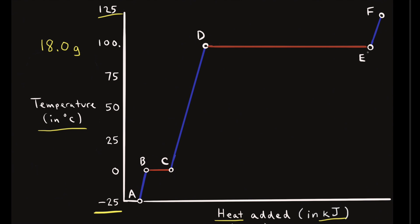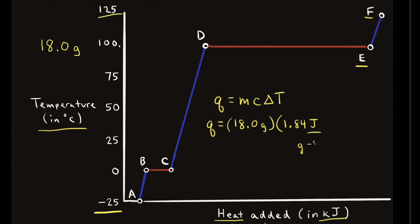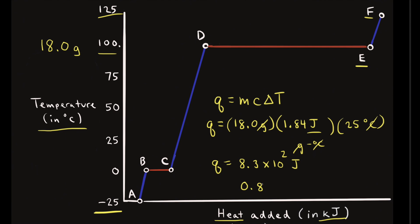Next, we're going to heat the gaseous water from 100 degrees Celsius to 125 degrees Celsius, going from point E to point F on the heating curve. Using Q = mCΔT: mass is 18.0 grams, the specific heat of steam is 1.84 joules per gram degree Celsius, and ΔT is 125 minus 100, giving positive 25°C. Units cancel and we get Q = 8.3 × 10² joules to two significant figures, or 0.83 kilojoules.